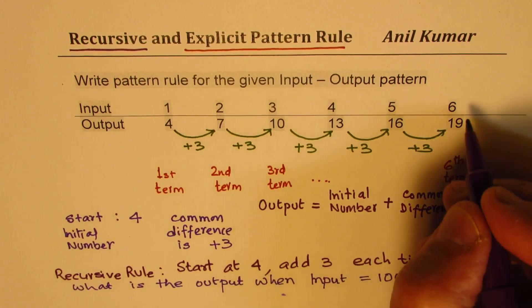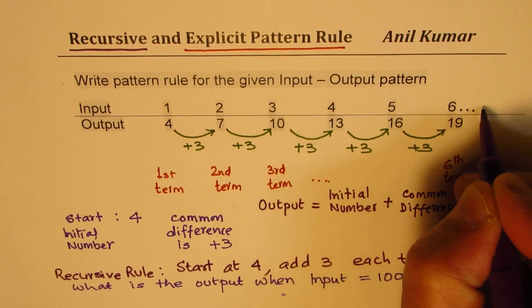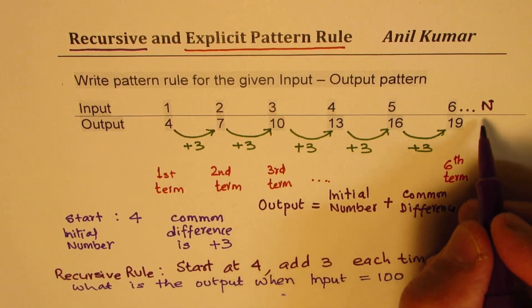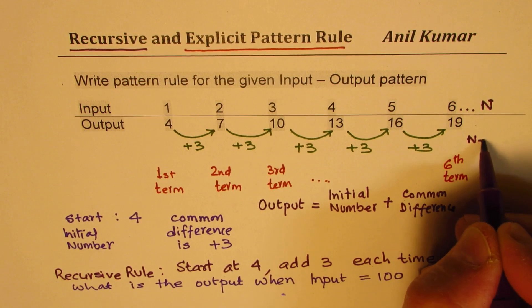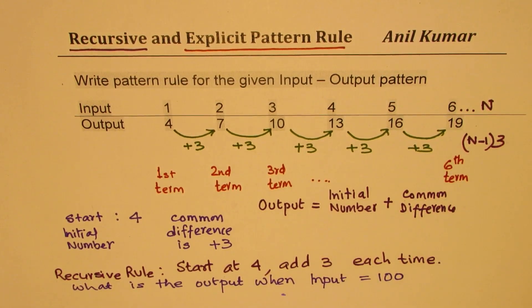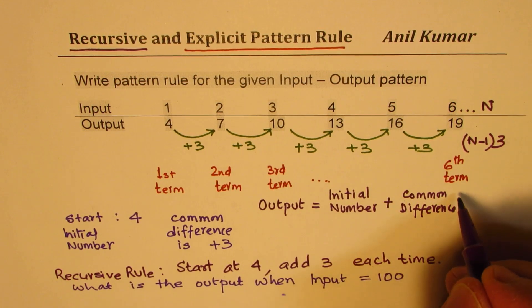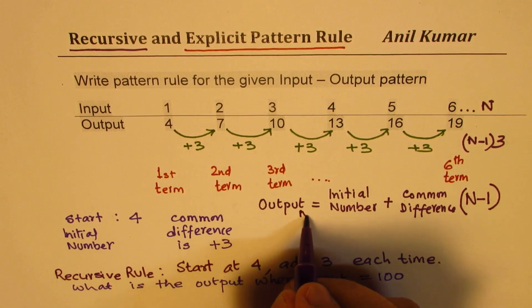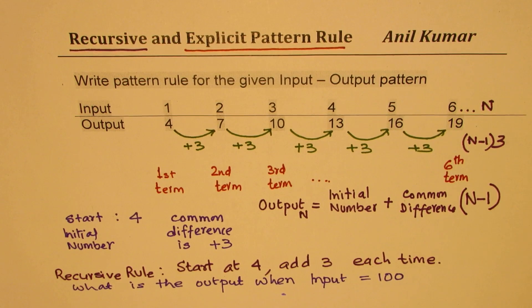So if this is the term number, in general, we can say for nth term, how many 3s will be added? 1 less than n. 1 less than n times 3. You get an idea? So the common difference is multiplied by n minus 1 if we are looking for output of nth term. Do you understand? That is how we get our formula.